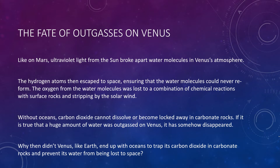We are left then with the question of what happened to Venus's water. Venus today is incredibly dry — it is far too hot to have any liquid water or ice on its surface. It is even too hot for water to be chemically bound in surface rock, and any water deeper in the crust or mantle was probably baked out long ago. Measurements also show very little water in the atmosphere. Overall, the total amount of water on Venus is about 10,000 times smaller than the total amount on Earth, which explains why Venus retains so much carbon dioxide. Without oceans, carbon dioxide cannot dissolve or become locked away in carbonate rocks.